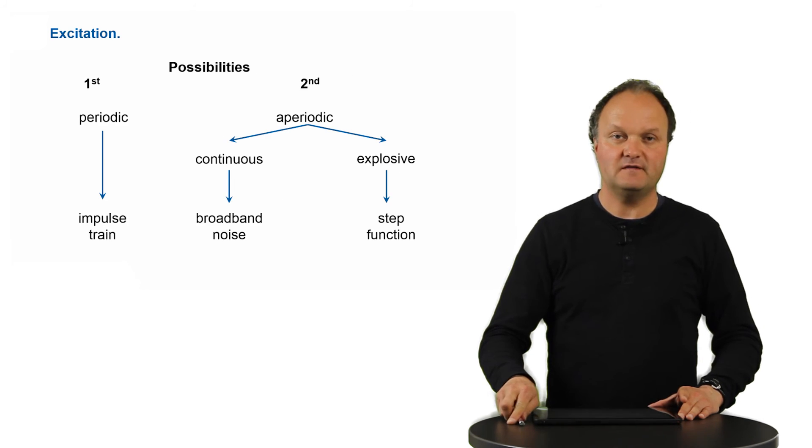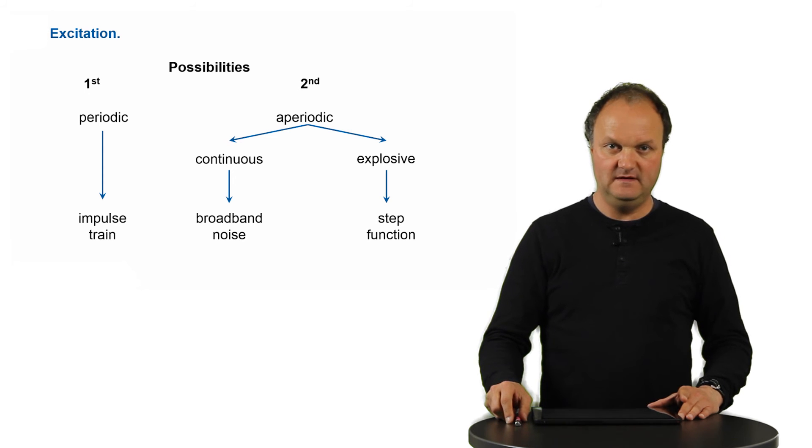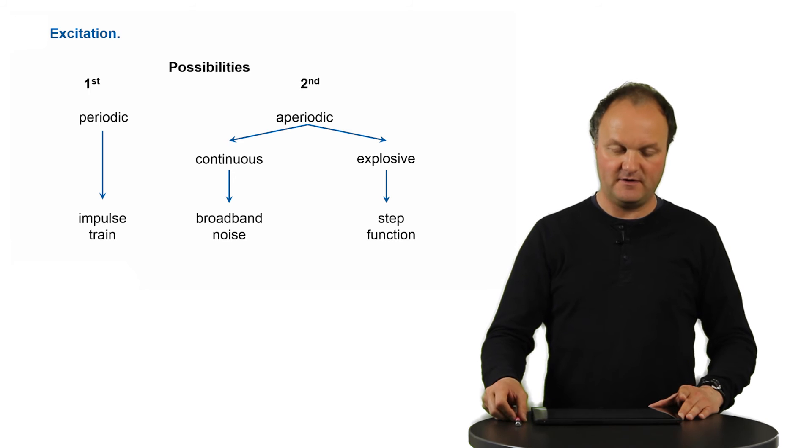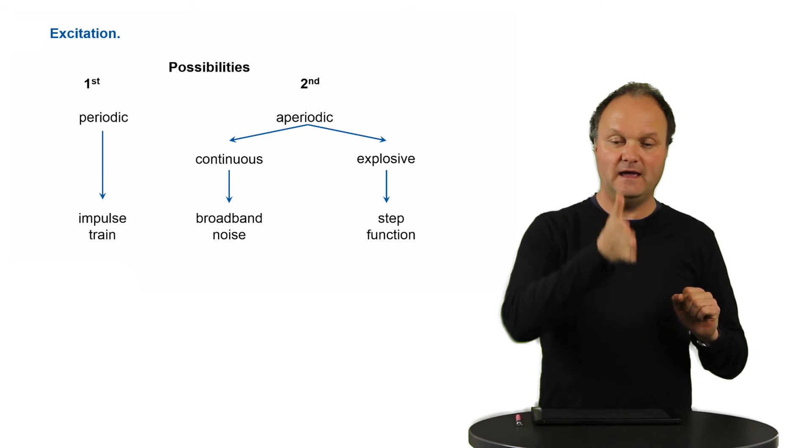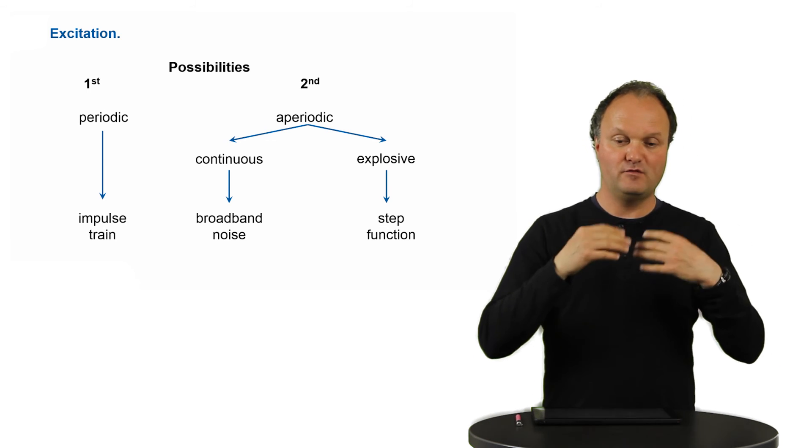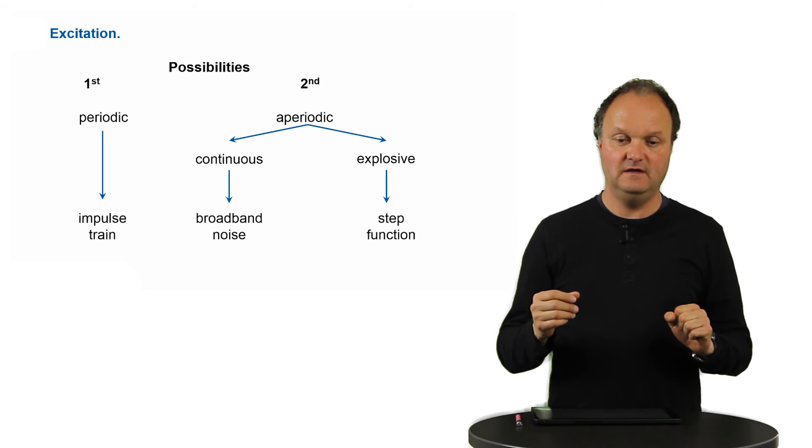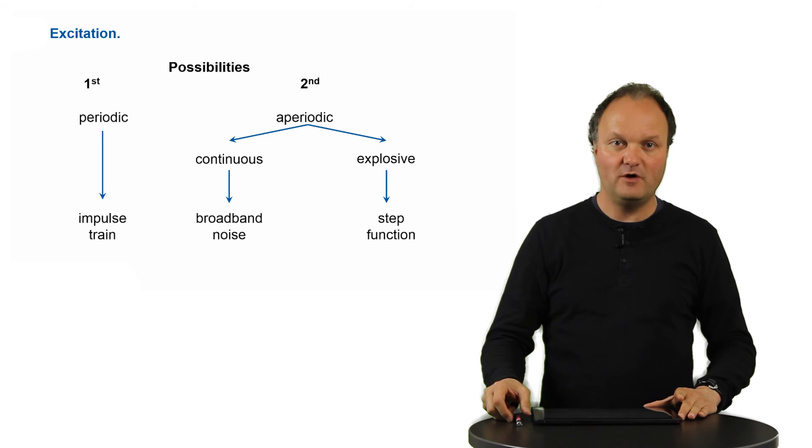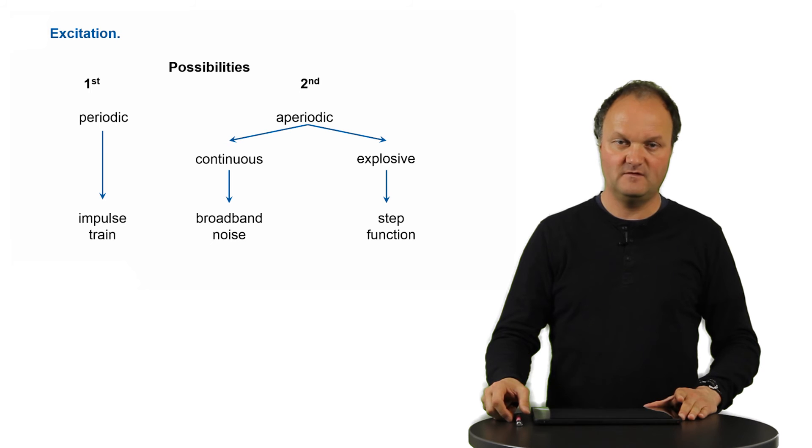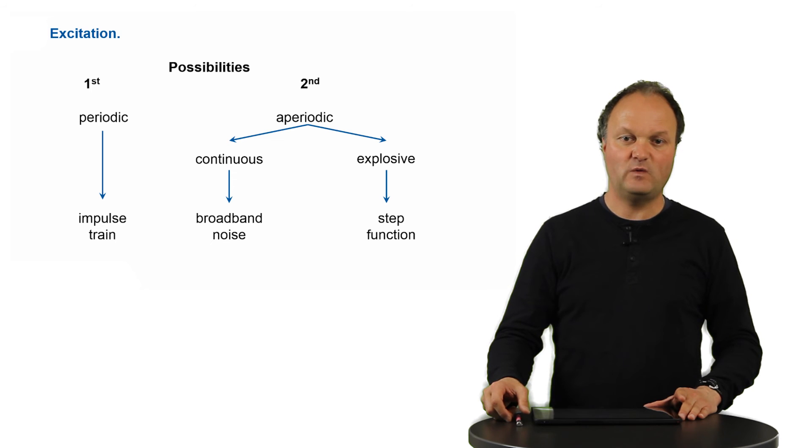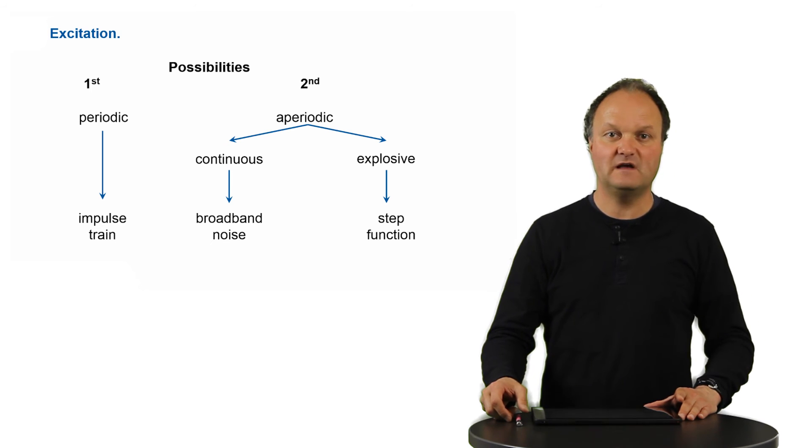The periodic excitation is only one possibility. We have a second one, which is a non-periodic or aperiodic excitation. And then there are two further possibilities. First is if the vocal folds are open, then the air can evaporate. And through the shape of the oral cavity, this will lead to some turbulence of the airflow. This turbulence acts as a kind of noise generator. And you can even feel where this happens when you produce the corresponding sounds.